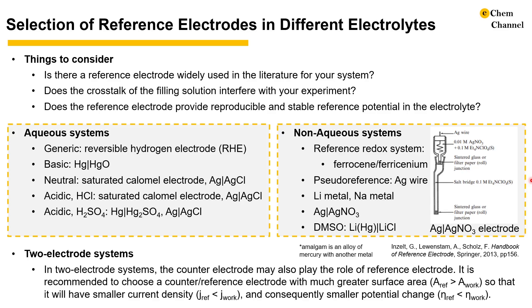In two-electrode systems, the counter electrode may also serve the role of the reference electrode. However, if we want more accurate results, the counter electrode should have a much greater surface area. From the Butler-Volmer equation, this results in smaller current density and therefore smaller potential changes of the counter electrode during biasing.